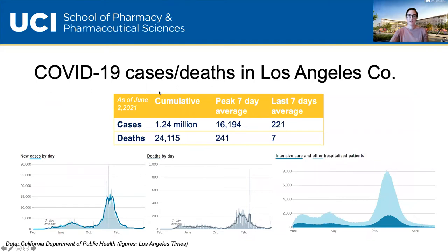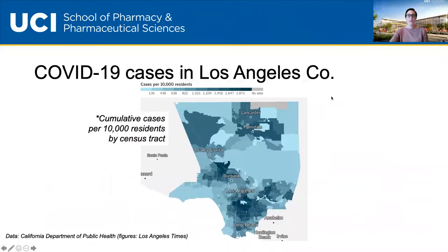COVID-19 in Los Angeles follows a similar story, but more intensive. We had a significant wave through the late fall and early winter of 2020-2021. So far we've had over 1.24 million cases and more than 24,000 deaths in LA County alone. Our recent seven-day average was only 221 cases per day and seven deaths per day — a long way from the peak in early January, though even those lower numbers of deaths remain significant.